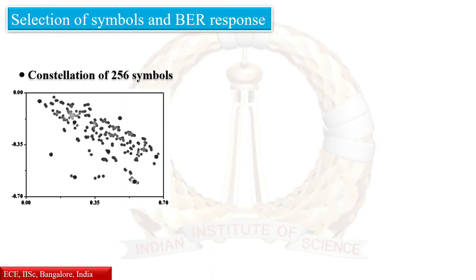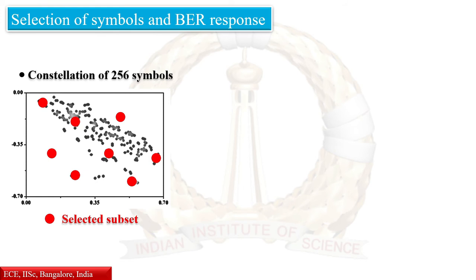The 2 to the power of 8 possible switching states are measured as 256 complex scatter points on a constellation diagram. Since many of these points are very close, we chose a small set of symbols from these, identified by maximizing the minimum Euclidean distance among the measured scatter points.